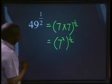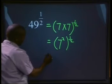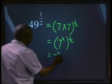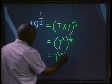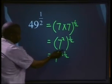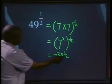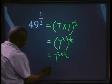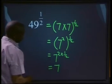We know one of our laws from raising a power to another power. This will be the same as 7 to the power of 2 times 1 over 2. 2 times 1 over 2 will give us 2 over 2, which equals 1, so our answer will be equals to 7.